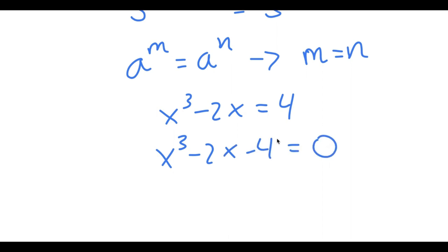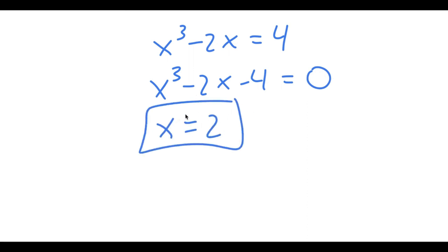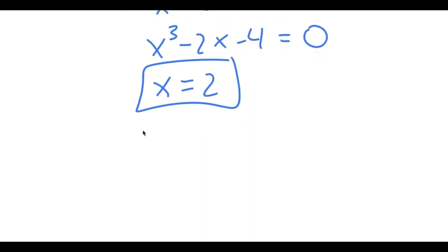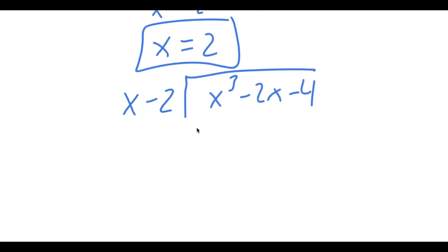Now to solve this, we have to find one solution of x first, so we can use that to find the other solutions. We have to plug in numbers until we find a solution. If you plug in 2, you get that the expression equals 0, so x equals 2 is one solution. Using this solution, we can find the rest by doing long division: we divide x cubed minus 2x minus 4 by x minus 2.